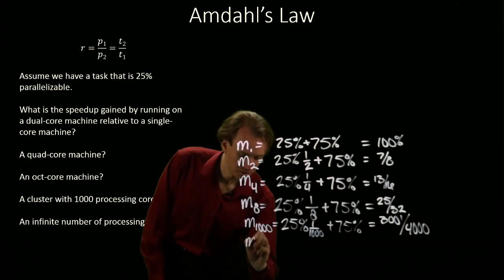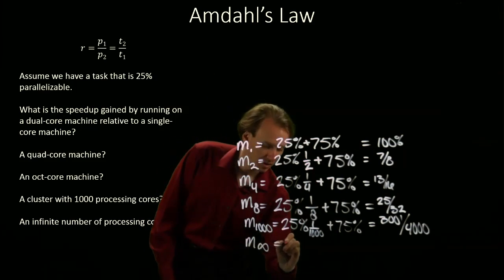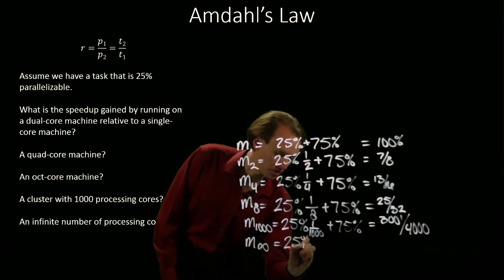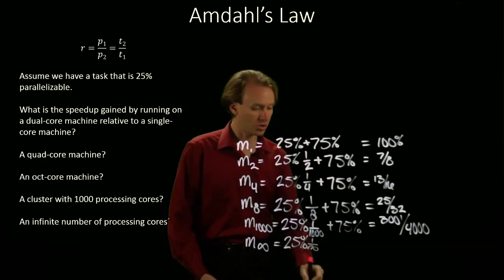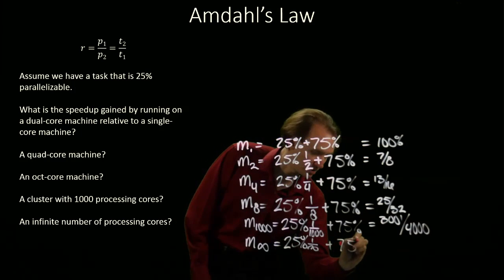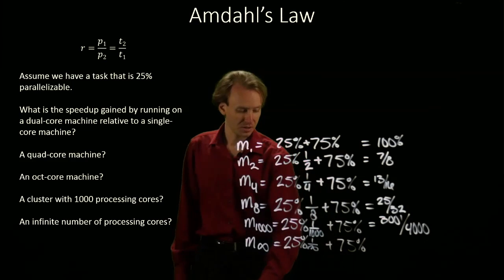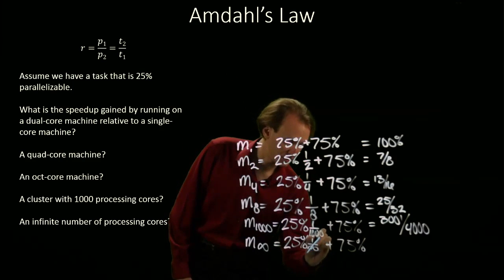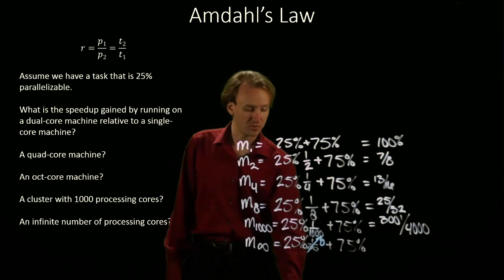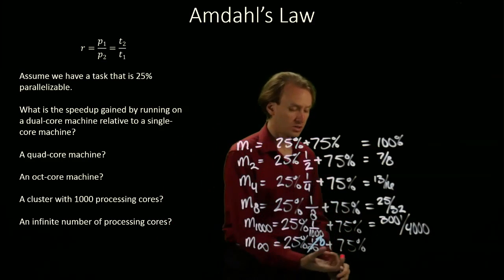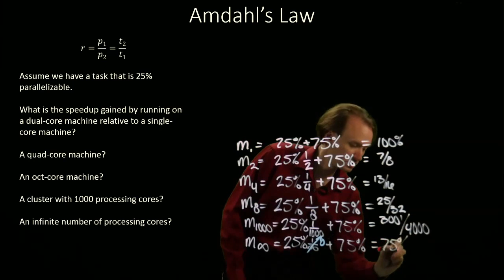So much so that if we have an infinite number of processors, we'd still have that 25% that's parallelizable. Now we're running it on an infinite number of cores. For the 75% that's non-parallelizable, well, 1 over infinity is basically 0, so I get 25% times 0. That chunk is now 0, and I'm just left with the 75%.